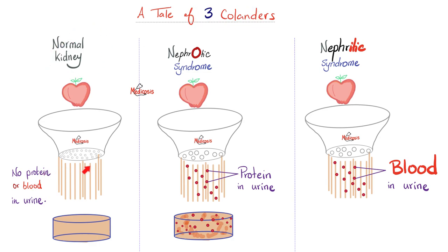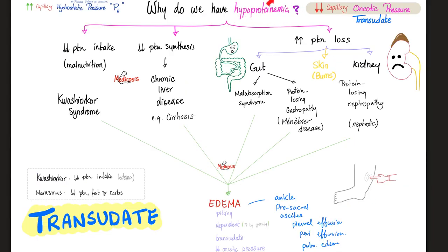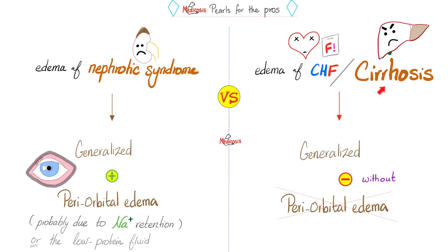Your kidney should be normal — it should not let any protein or blood into the urine. In nephrotic syndrome, you're letting lots of protein into the urine. In nephritic syndrome, 'itis' means inflammation — your kidney is literally bleeding into the urine. Nephrotic syndrome causes hypoproteinemia due to proteinuria, called protein-losing nephropathy, leading to pitting dependent transudate edema due to decreased oncotic pressure. Nephrotic, cirrhotic, and CHF are all causes of generalized pitting edema.